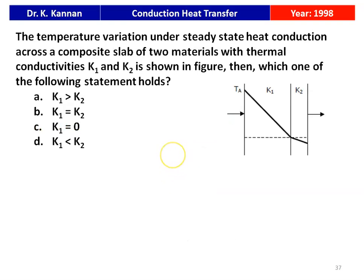The next question is from the 1998 question paper. The temperature variation under steady-state heat conduction across a composite slab of two materials with thermal conductivities K1 and K2 is shown in the figure. Which one of the following statements holds good? Options: K1 > K2, K1 = K2, K1 = 0, or K1 < K2.